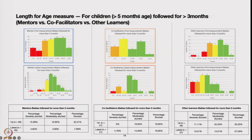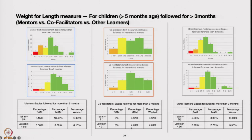Here is length-for-age data. We wanted to look at the length for children more than three months of age. Stunting also reduced remarkably — 32% of children were stunted at the time of adoption, and that reduced to 7.69%. There is a reduction in both severe stunting and moderate stunting. There is not much change in other learners or even co-facilitators, but mentors did remarkably well with reduction in stunting.